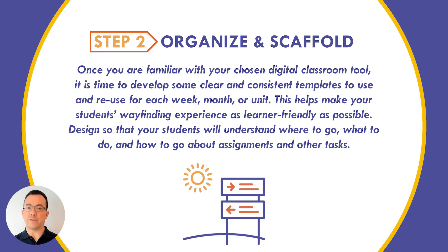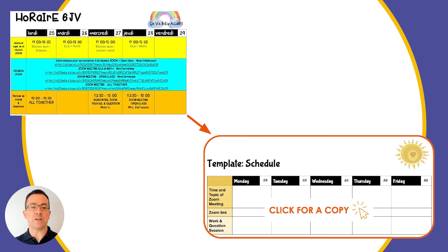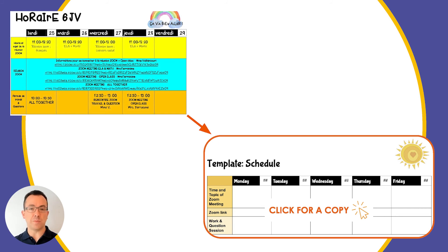Let's briefly look at a few examples of these at both the elementary and high school level. Our first example comes from an elementary school teacher — it's a fairly simple template that covers a week. It's colourful, easy for elementary students to digest, and contains the times for the daily Zoom meeting, the subject that's going to be covered, and a few other pieces of information pertaining to remedial time and open class time.